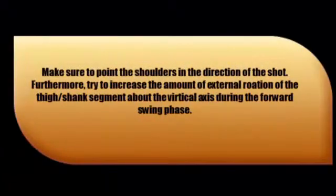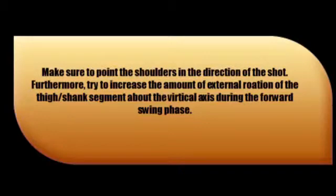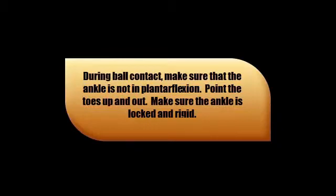Next, the athlete needs to make sure that he points his shoulders in the direction of the shot. Furthermore, he should try to increase the amount of external rotation of the thigh-shank segment about the vertical axis during the forward swing phase. Right now there appears to be a compensatory lack of external rotation, which appears to result from not getting the shoulders facing the direction of the target. Lastly, at the point of ball contact, the ankle must not be in plantar flexion. Point the toes up and out to create dorsiflexion, and make sure that the ankle is locked and rigid. This will help increase the coefficient of restitution, thus giving greater power in the final shot.